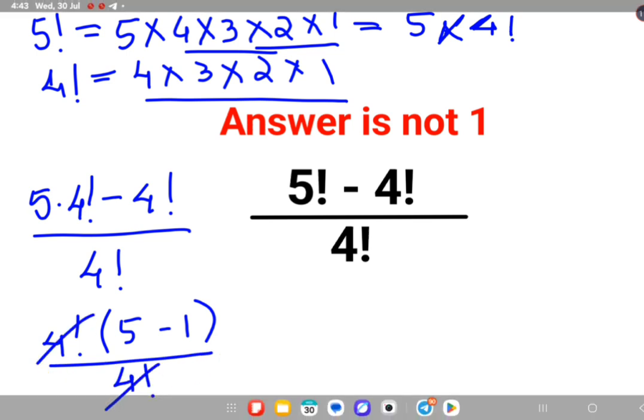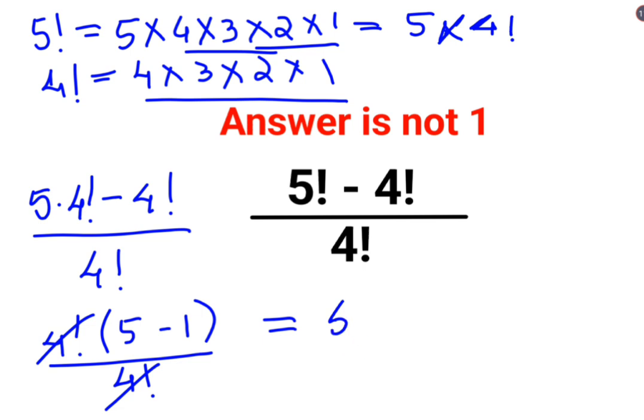So this and this gets cancelled and you are just left with 5 minus 1. The answer is 4. I hope this is very clear to everyone. That's it for today. I will see you in the next video.